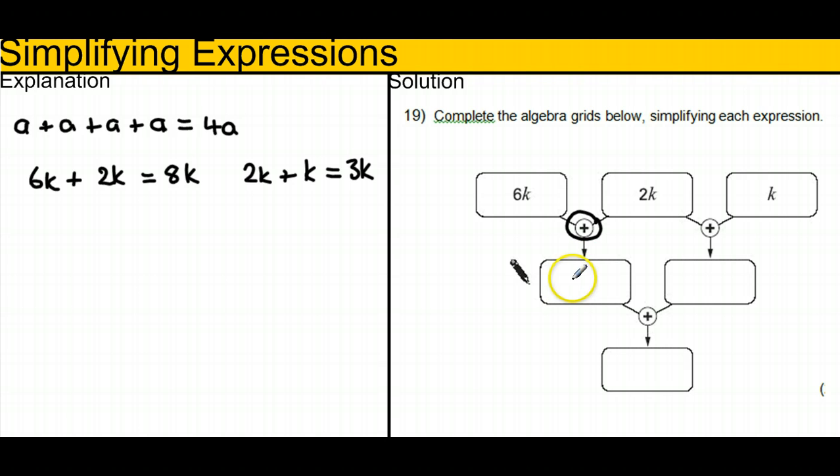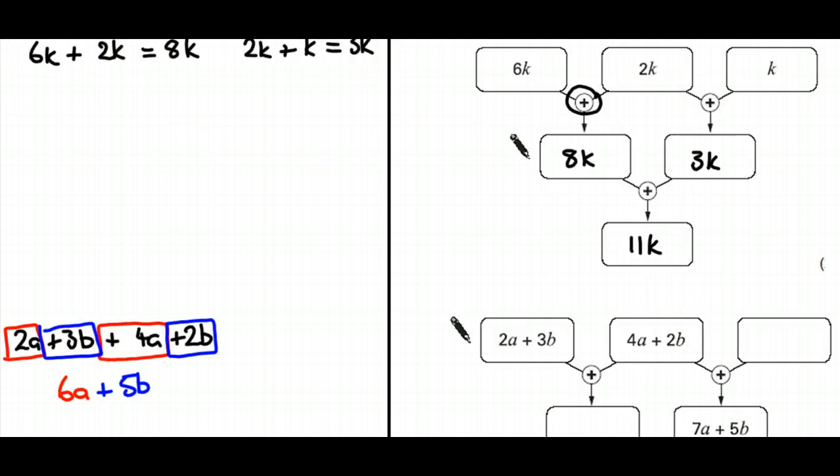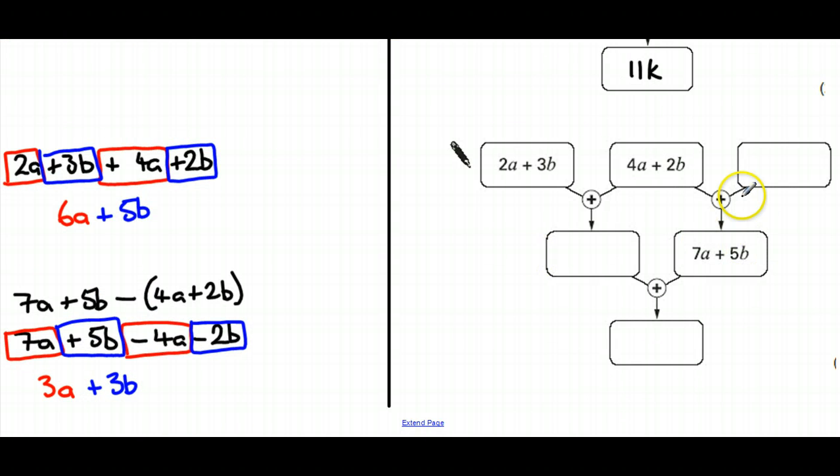So the answers you should have got were 8k, 3k, and the total of those two would be 11k. And then here you can see we should have had 3a plus 3b. These two added together give 6a plus 5b.